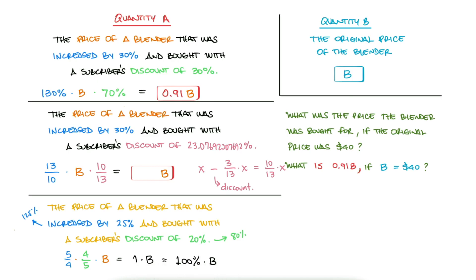So to answer the second question, since we already calculated that the price the blender was bought for was 0.91B, we can just substitute B with 40 and get $36.40.